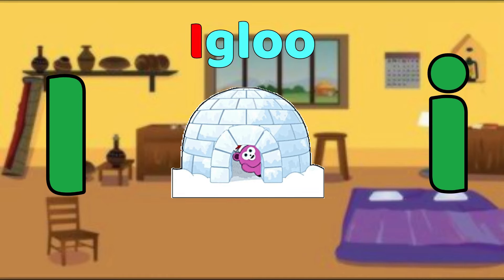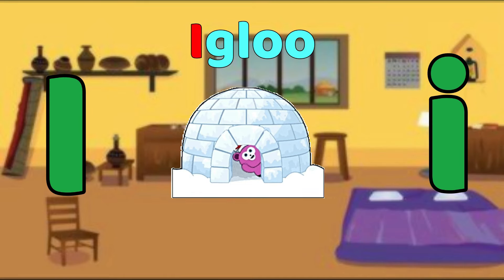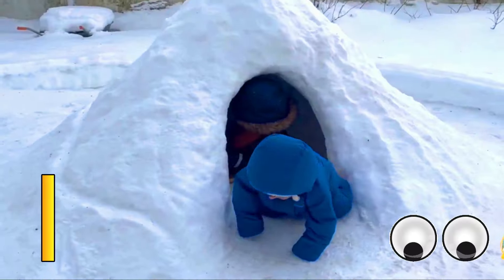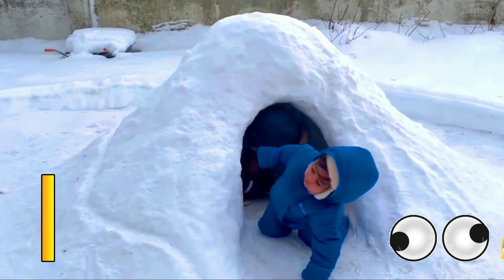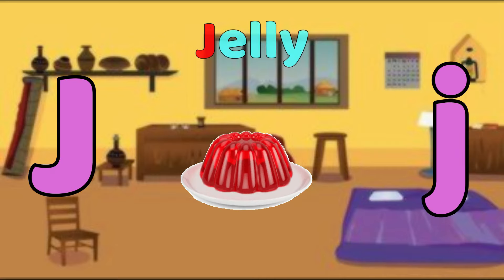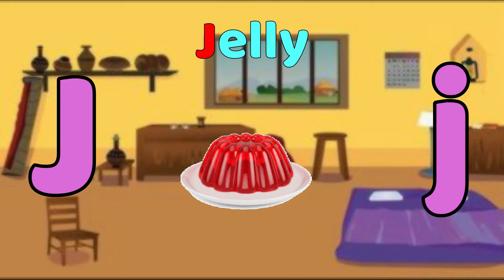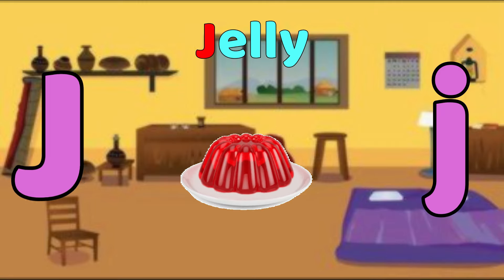I is for Igloo. E, igloo. E, igloo. I, igloo. J is for Jelly. J, jelly. J, jelly. Jelly.